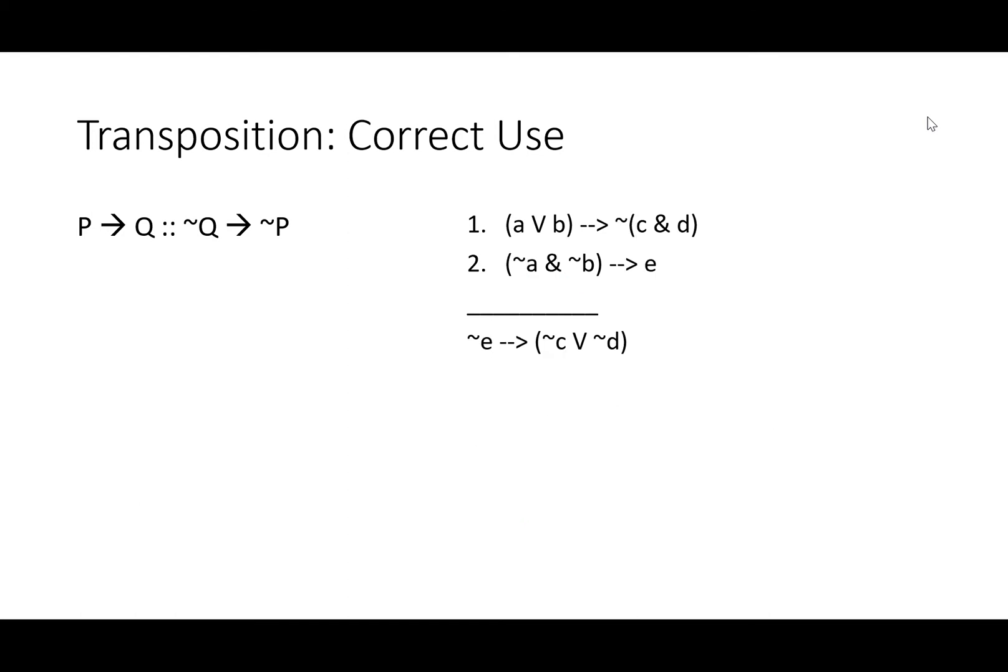Transposition is an excellent rule for when you need to change the order of things in conditionals or when you need to introduce or remove negations. It can help get you through a lot of otherwise very complex problems. Let's see one of those more complex problems. Premise one, if either A or B, then it's not the case that C and D. Premise two, if not A and not B, then E. Therefore, if not E, then either not C or not D. Just looking at this, hopefully we can see a few rules that you might want to use. Perhaps you'll be using DeMorgan's to set up for a hypothetical syllogism. Notice that we're just a DeMorgan's away from having these two match. And transposition could put E where we want it and negate it as we want it. So we've got some ideas for how to start, but we're actually going to start with a transposition for line one.